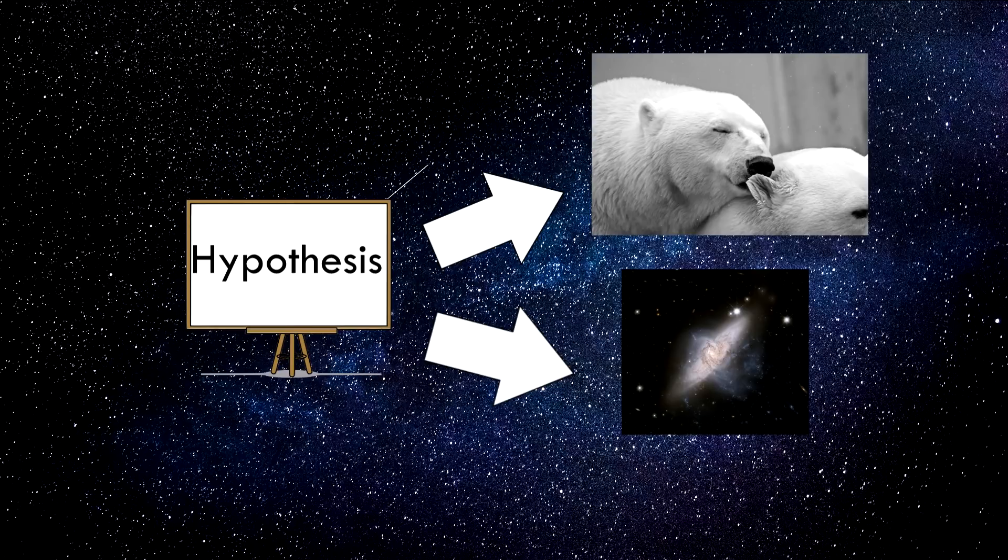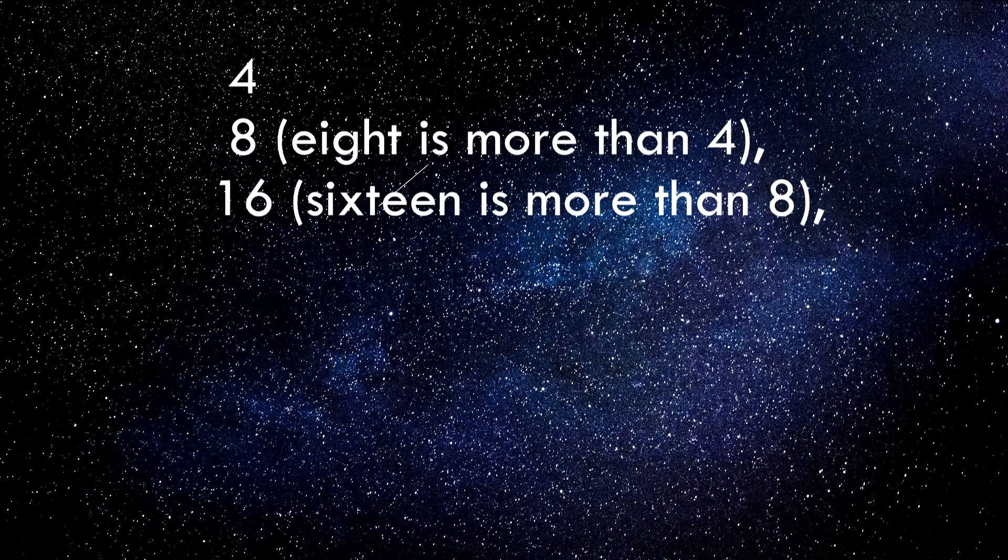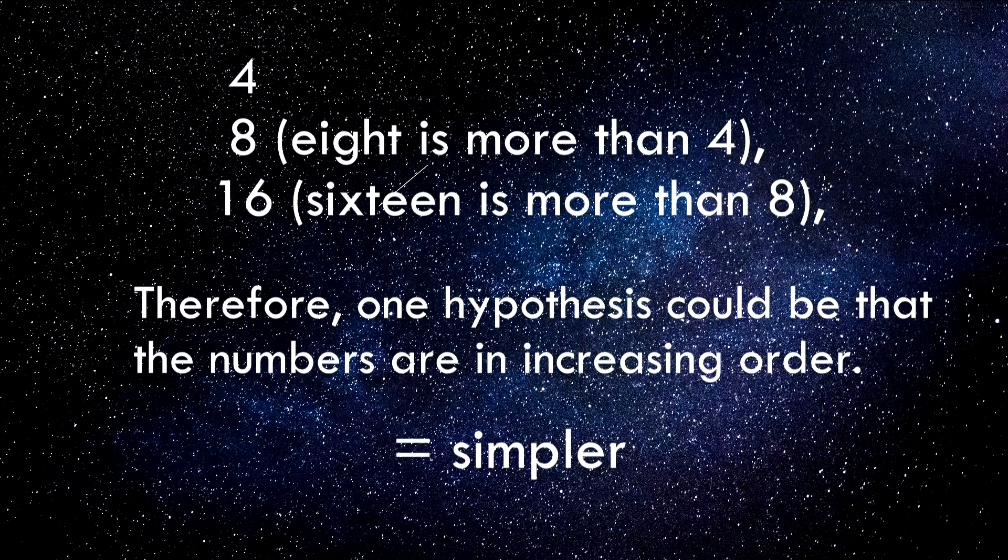If you were to test, for example, 4, 8, 16, your test could only serve to confirm your hypothesis and not disprove it. The reason why is that the rule could have simply referred to numbers in increasing sequence, which is even simpler than the hypothesis that they double every term.